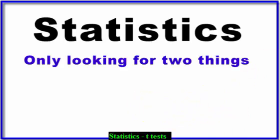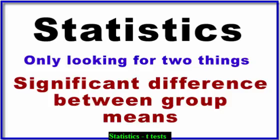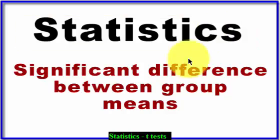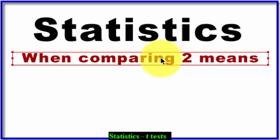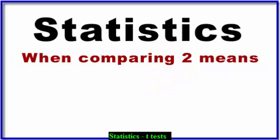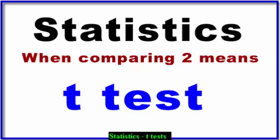Remember that you're really only looking for two things in all of statistic-dom. One of them is to see if there's a difference between group means — a significant difference. Significant means that somebody did some math on it. So when you're comparing two means and only two means, you're going to use a t-test. If you're going to compare more than two means, you're going to use an analysis of variance, or ANOVA. So whenever you're comparing two group means, you use a t-test.